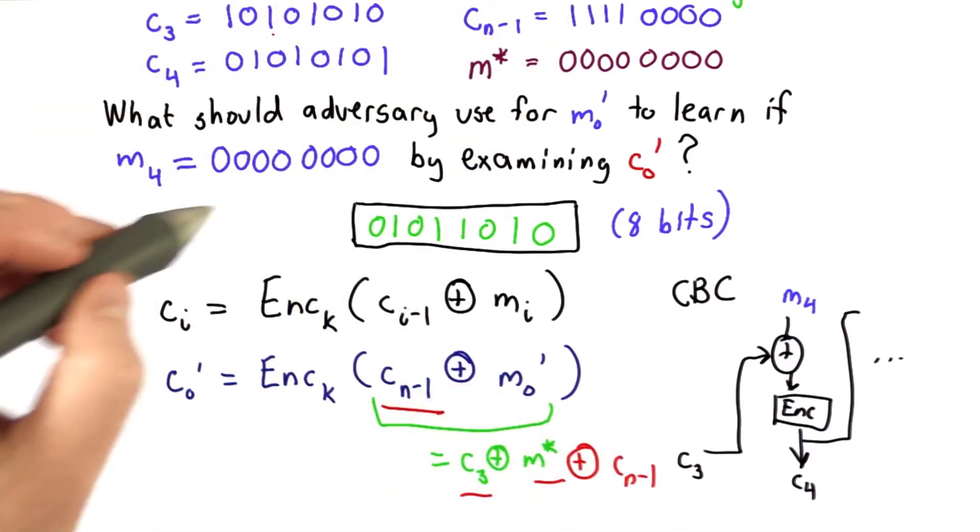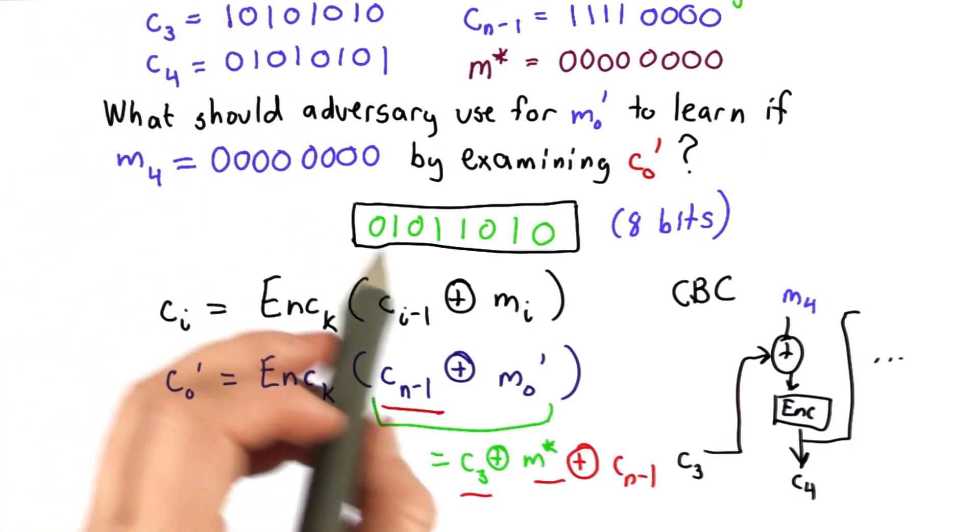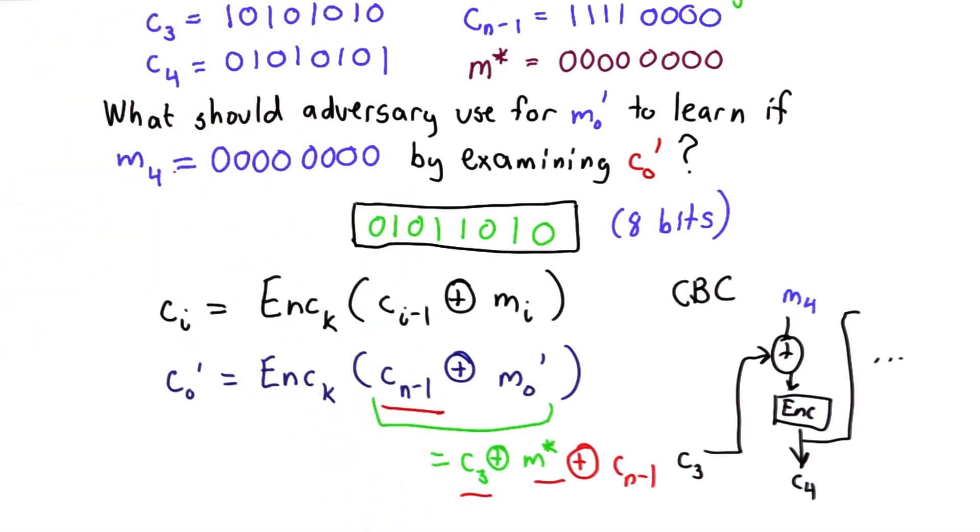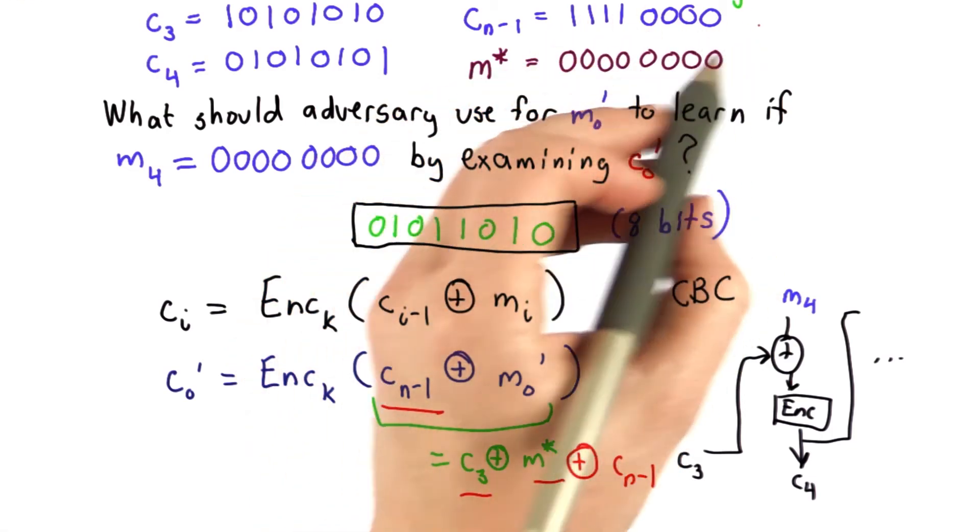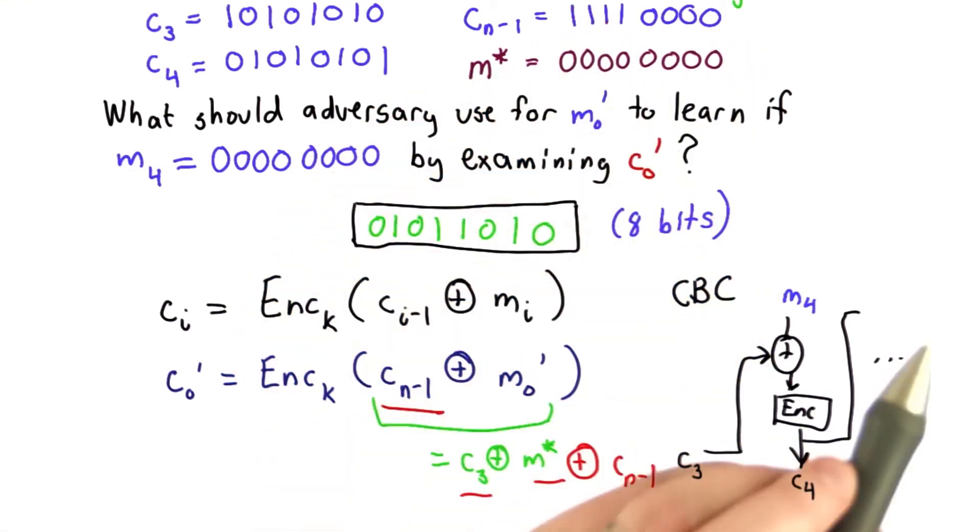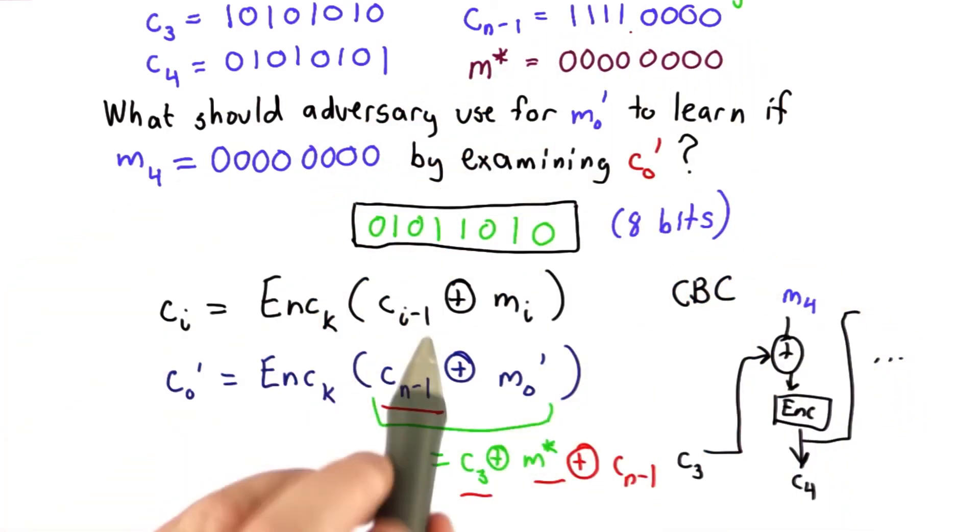With the values I've chosen, C3 is this, m star is all 0, so we don't need to worry about that in the xor, and n minus 1, the last ciphertext block, is all the 1. So that's going to flip the first 4 bits. That's why we get this value.